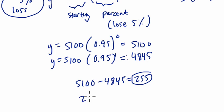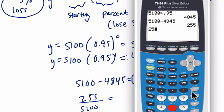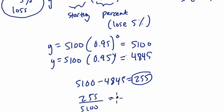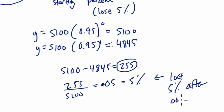Well, 255 out of 5100, that's going to be 5%. Let's confirm it. 255 divided by 5100, enter, is 0.05. It's 0.05, and that's 5%. So here, we lost 5% after one year.